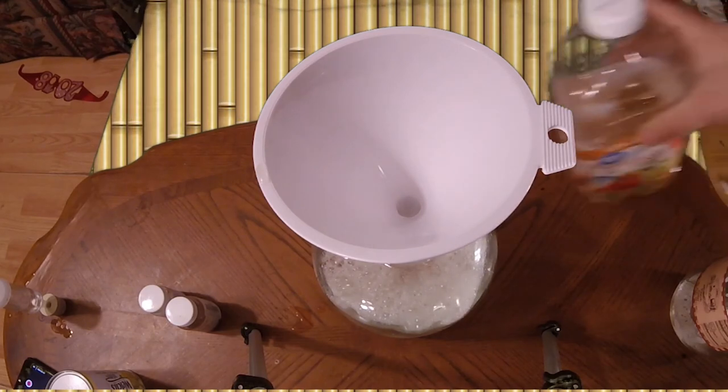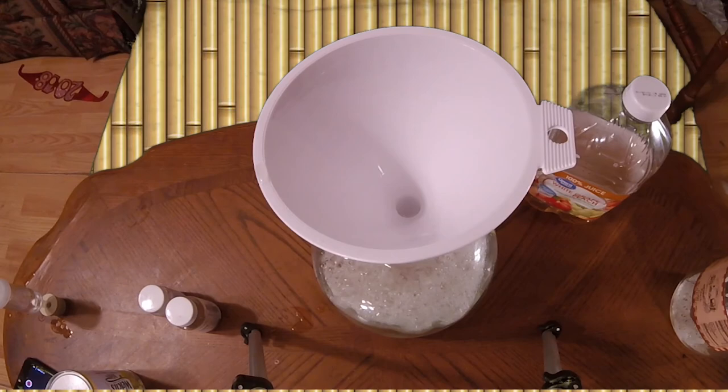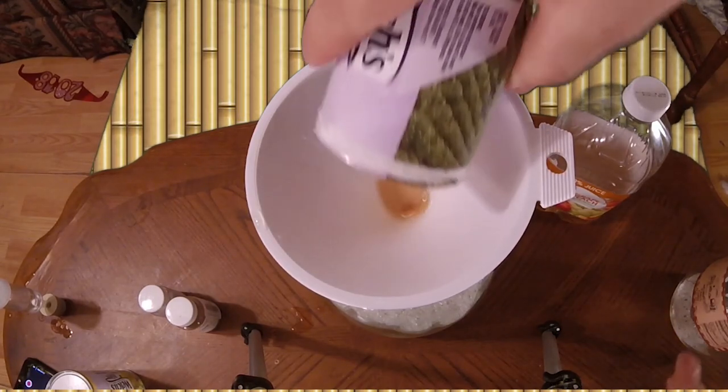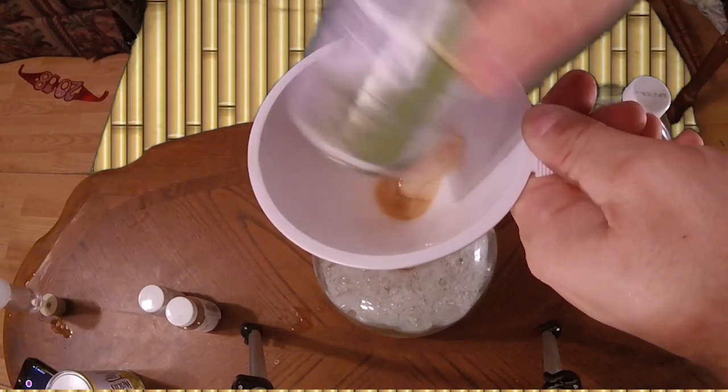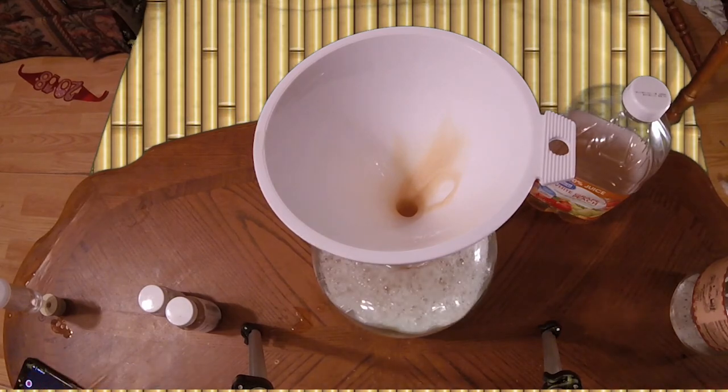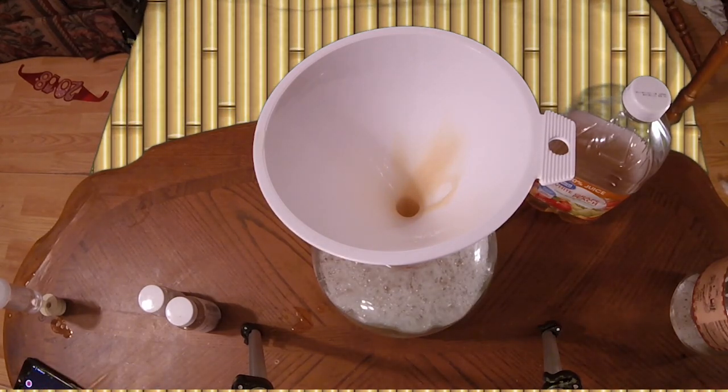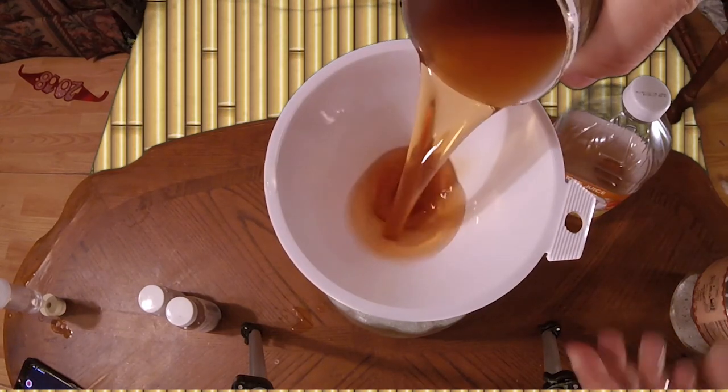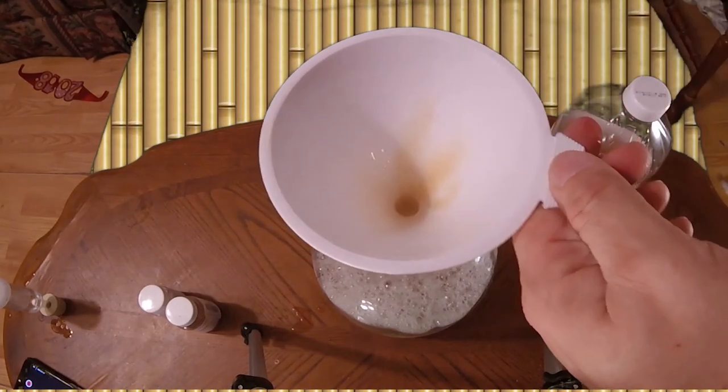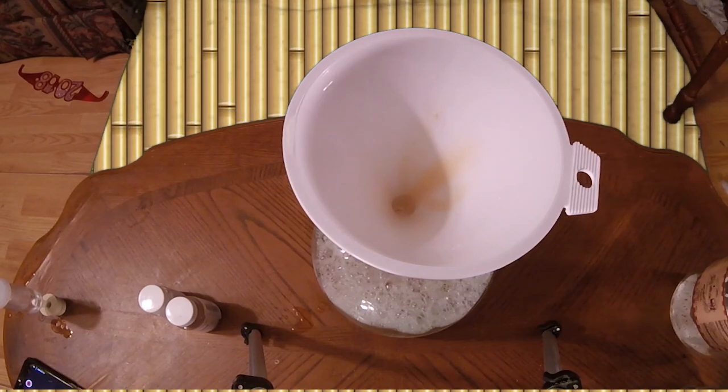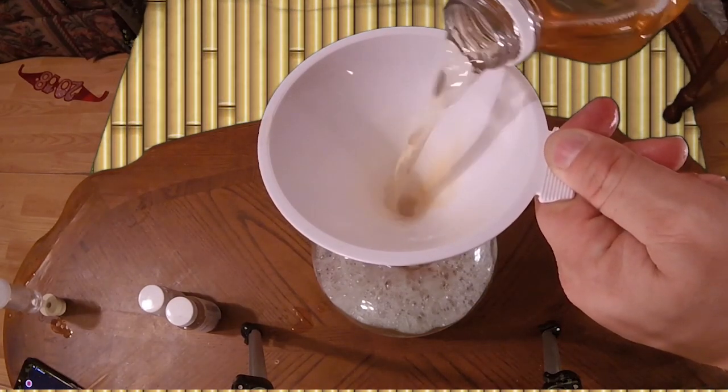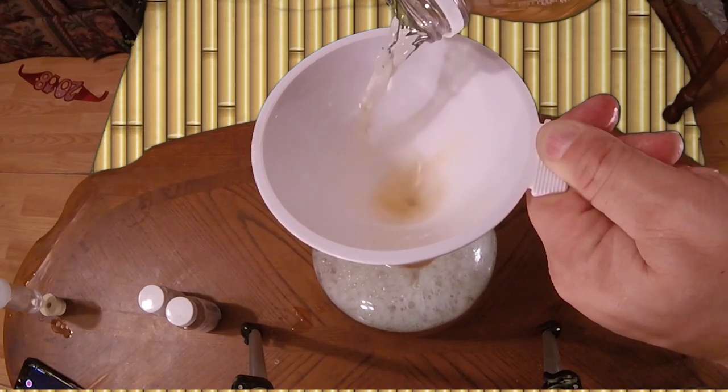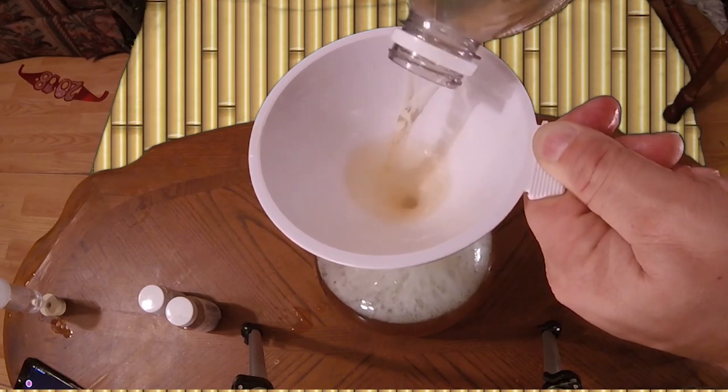Don't pour it all in just yet because we're going to add our white grape juice concentrate and then we'll top it off with the rest of the juice. Two cans of this. And this juice should be enough, if not we'll just top it the rest of the way up with water, but I think this is going to be just fine. You want it about two inches. Yeah, this is perfect, perfect amount.